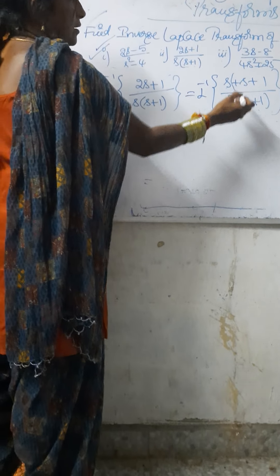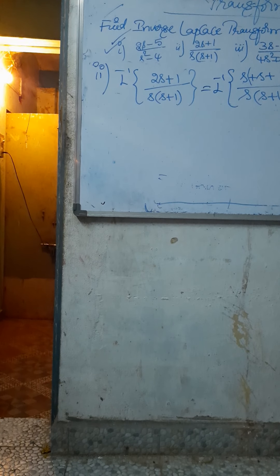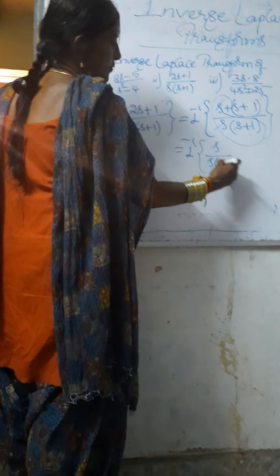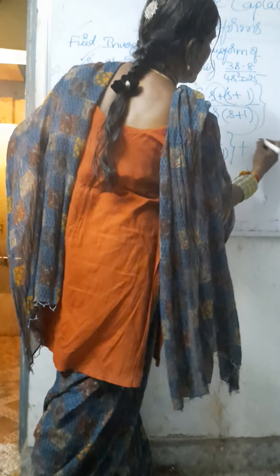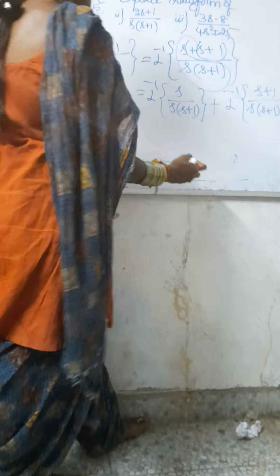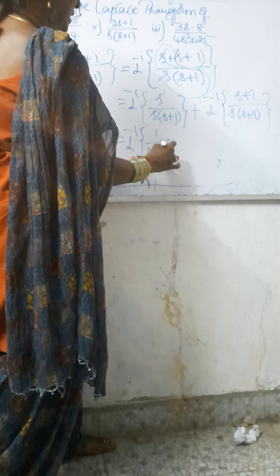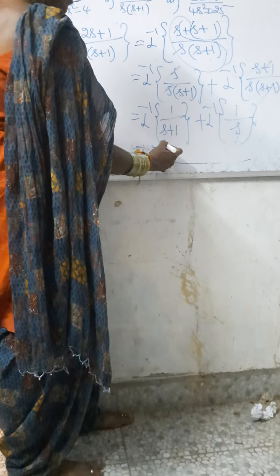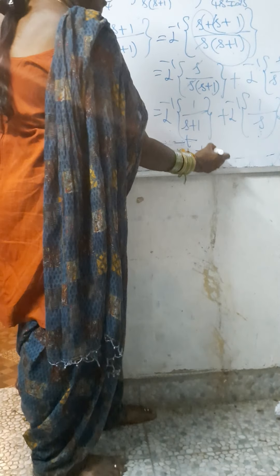So we arrange it as (s plus s plus 1) by s(s plus 1), and separate it into inverse Laplace Transform of s by s(s plus 1) plus inverse Laplace Transform of (s plus 1) by s(s plus 1). In the first term, s gets cancelled giving 1 by (s plus 1), and in the second term (s plus 1) gets cancelled giving 1 by s. So we get inverse Laplace Transform of 1 by (s plus 1) which is e to the power minus t, plus inverse Laplace Transform of 1 by s which is 1.